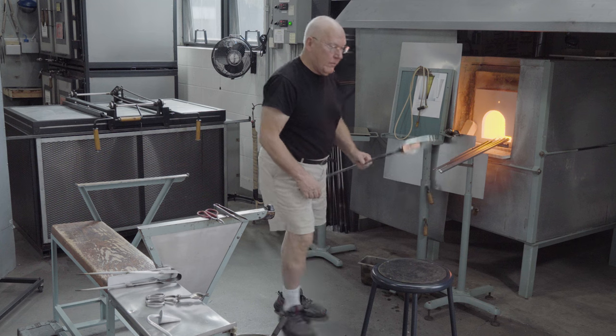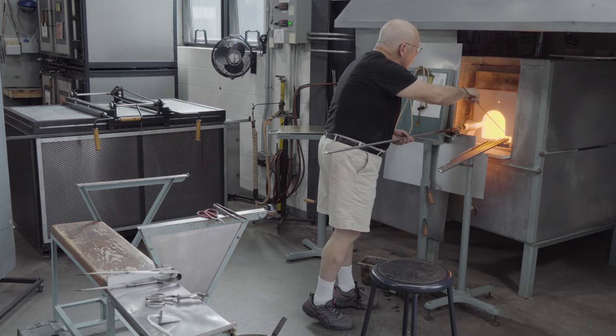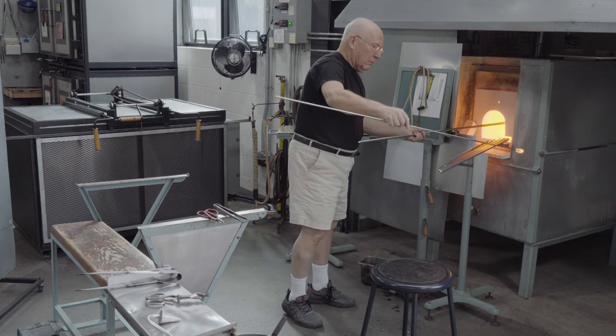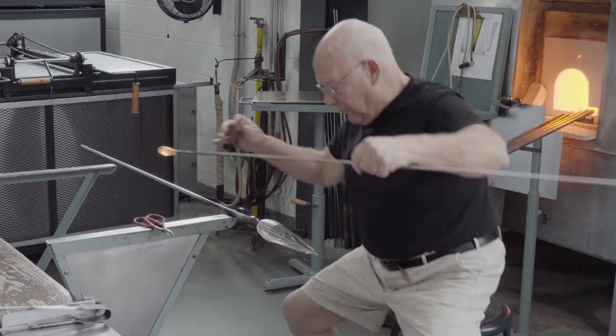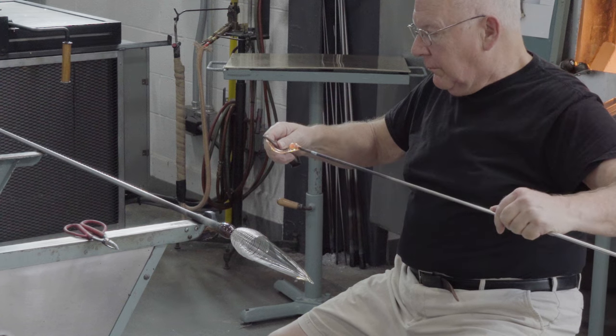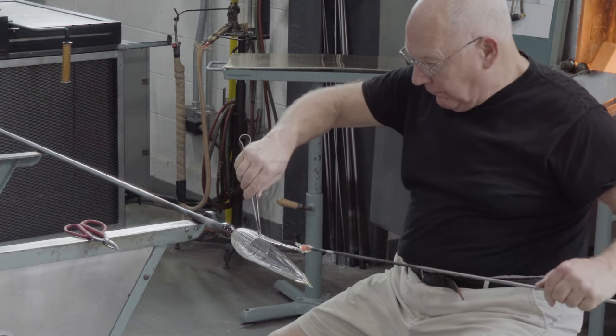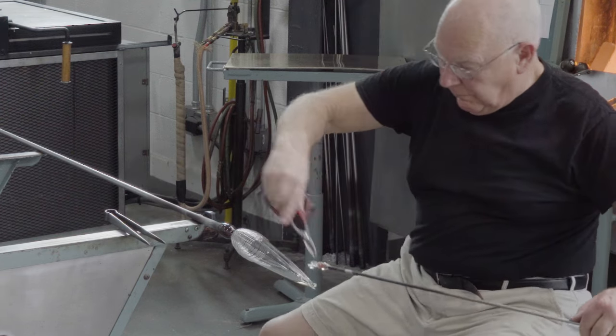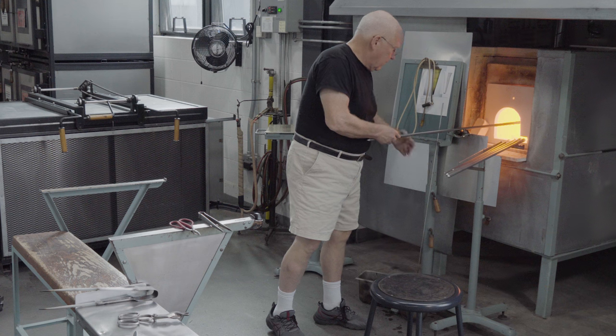While this likely was done with an assistant, I do it solo. It's an interesting choreographic challenge. The gather is elongated, a loop is made, touched, laid down, pressed on gently, and the glass is cut free of the gathering rod. This is repeated 11 times.